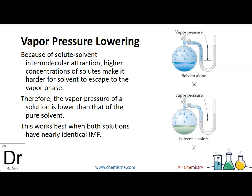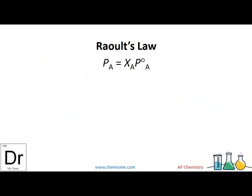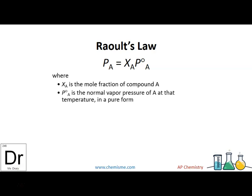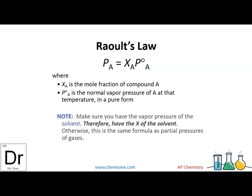This works best when both solutions have nearly identical intermolecular forces. So if you're trying to get water to not evaporate, you need to mix it with something that also has hydrogen bonds. If you're talking about hexane — which is nonpolar, made of C's and H's — you would need to add something with similar intermolecular forces, which would also have London dispersion forces. Raoult's law looks a lot like the partial pressure rules we did for gases, where Xa is the mole fraction of the compound and Pa is the normal vapor pressure of that substance.